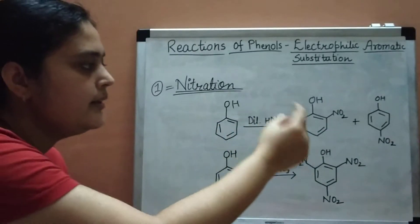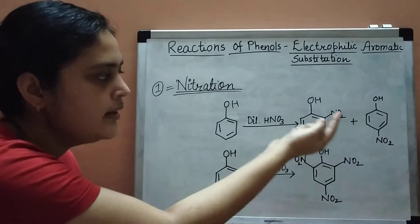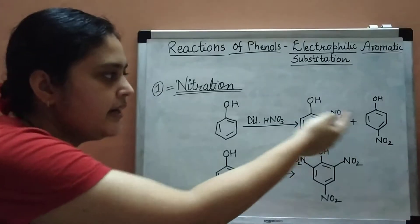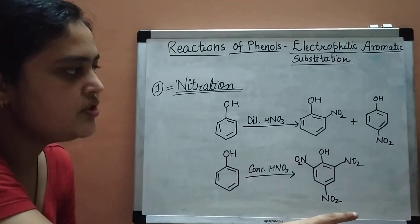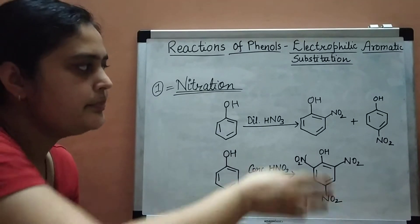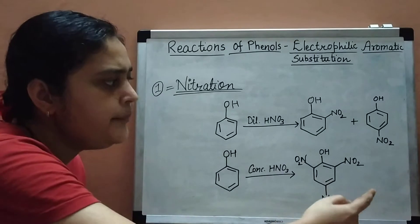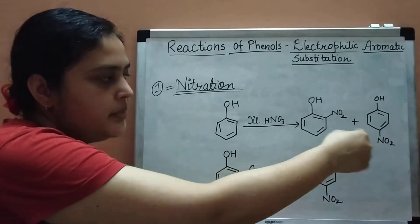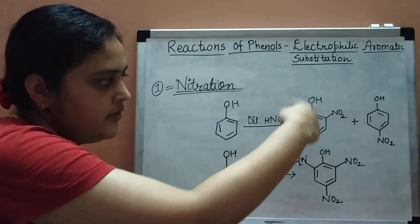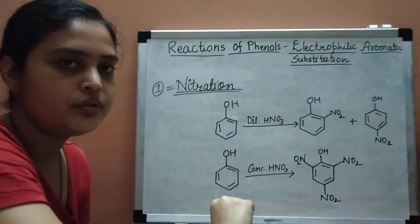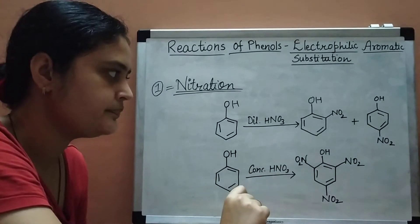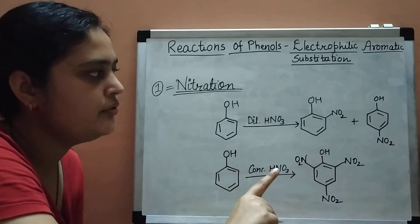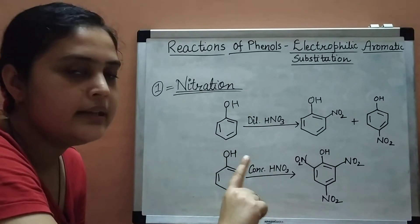When we add dilute HNO3 to phenol, we get two products: ortho-nitrophenol and para-nitrophenol. The major product is para-nitrophenol, because there is no steric hindrance in that case, whereas there is steric hindrance in the case of ortho-nitrophenol.